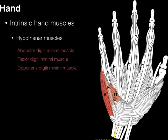If we take a look at the ulnar nerve as it courses into the hand, it traverses a tunnel formed by connective tissue attaching to the pisiform bone — that's called Guyon's Canal. After the ulnar nerve traverses Guyon's Canal, it enters the hand and gives innervation to the hypothenar muscles, as well as many other intrinsic hand muscles and some skin.